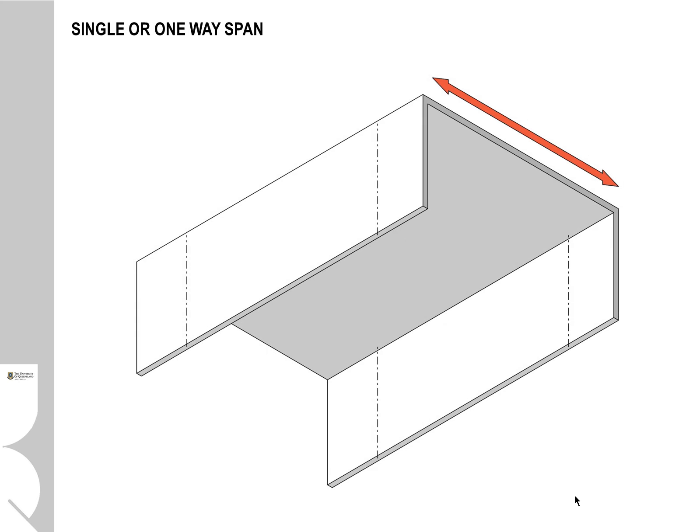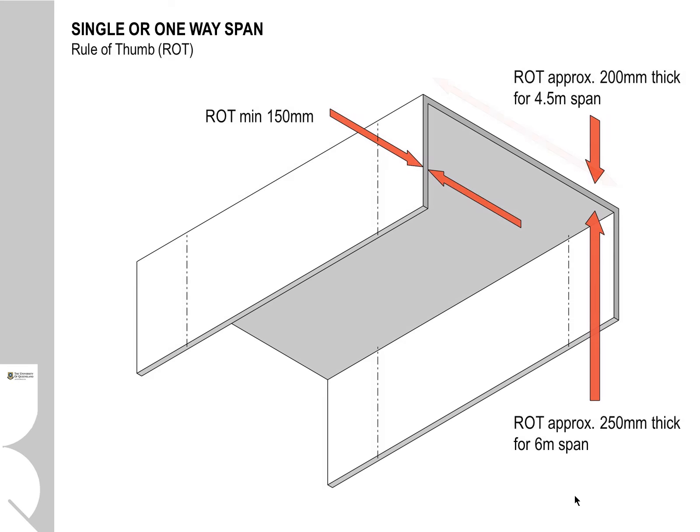We can see here a very simple construction system which is a concrete slab spanning in one way between two walls. So this is a single span or a one-way span. Now often during design, we want to size the construction elements — the thickness and the heights and so on — with a reasonable degree of foresight, but not necessarily to a level of detail that an engineer would look at it.